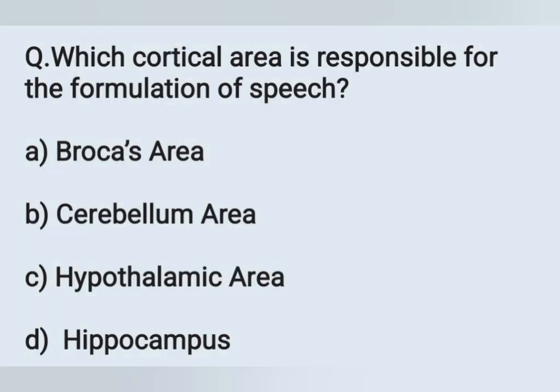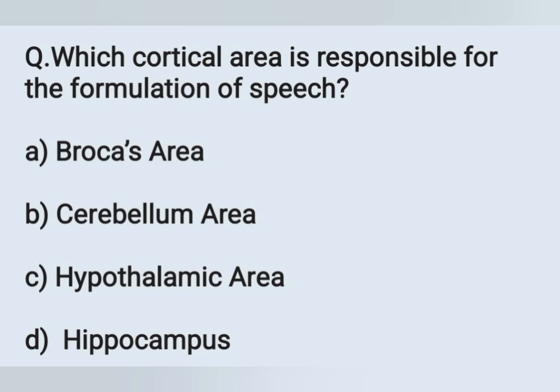The next question: Which cortical area is responsible for the formulation of speech? Option A: Broca's area, Option B: cerebellum area, Option C: hypothalamic area, Option D: hippocampus. The speech center — the area responsible for the formulation of speech — is Broca's area. Option A is the correct answer.